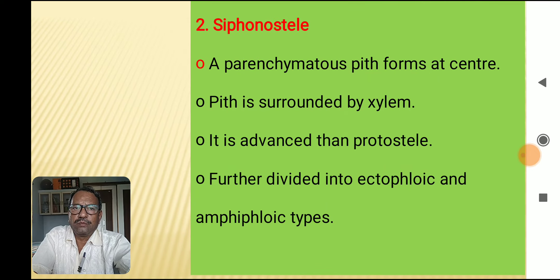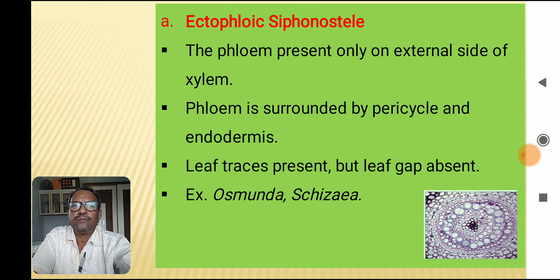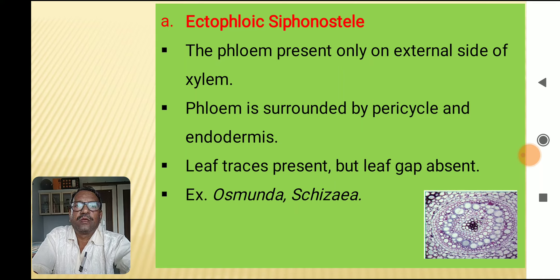The second major stele type is siphonostele. A parenchymatous pith forms at the center, surrounded by xylem. It is more advanced than protostele. It is further divided into ectofloic and amphifloic siphonostele. In ectofloic siphonostele, phloem is present only on the external side of the xylem, and is surrounded by pericycle and endodermis.